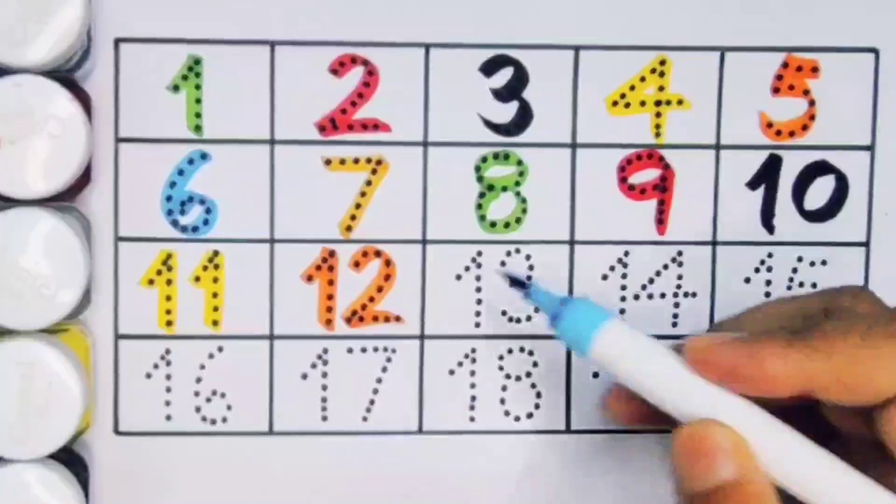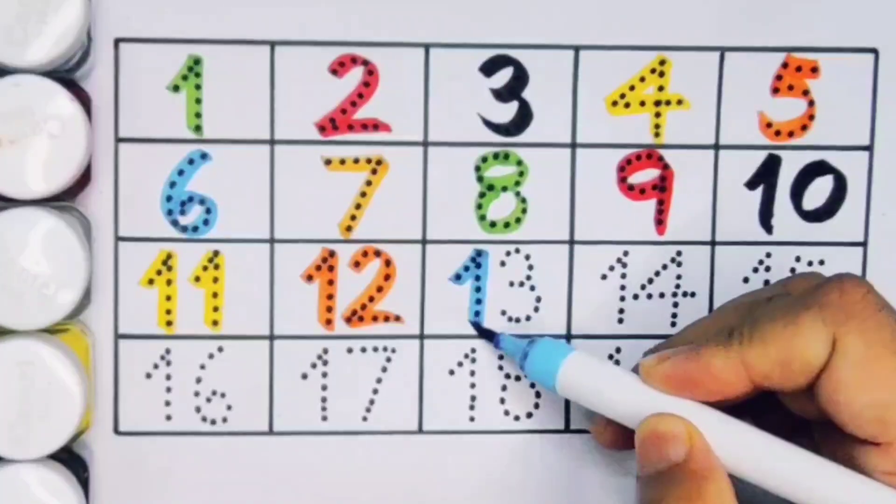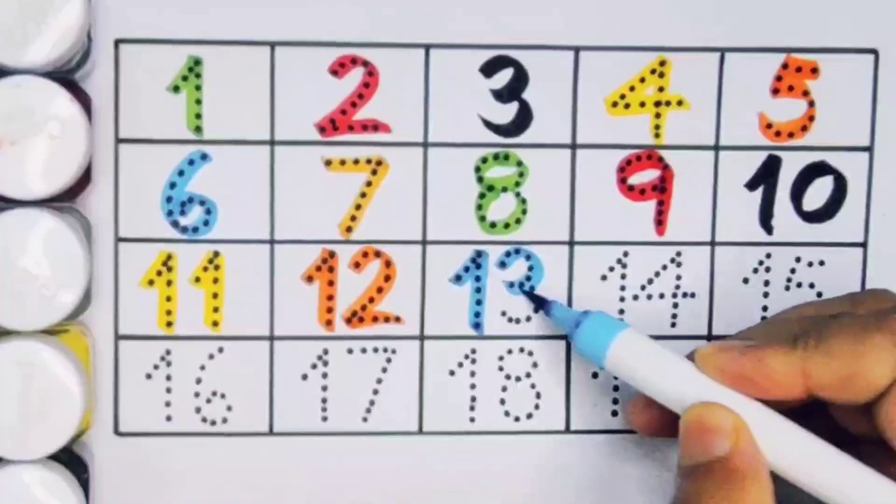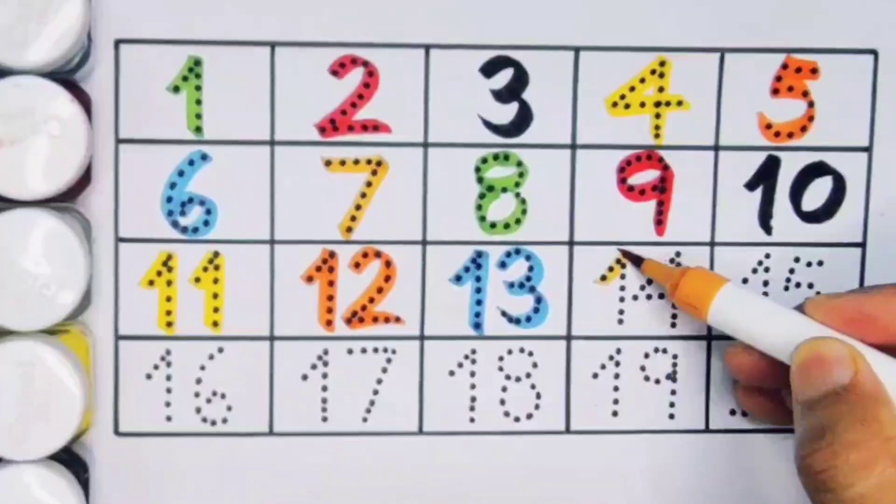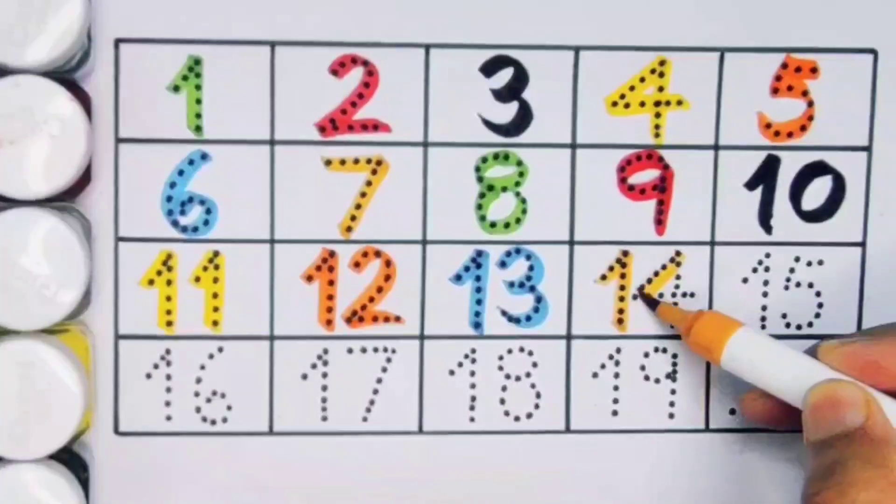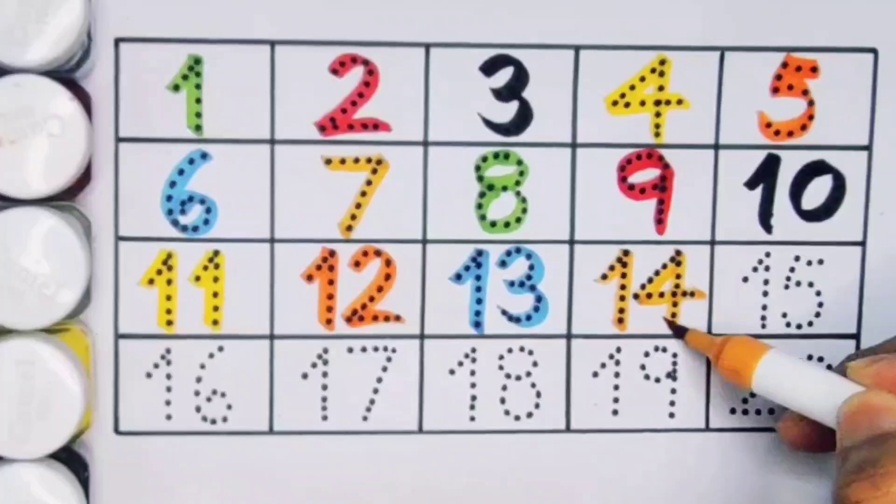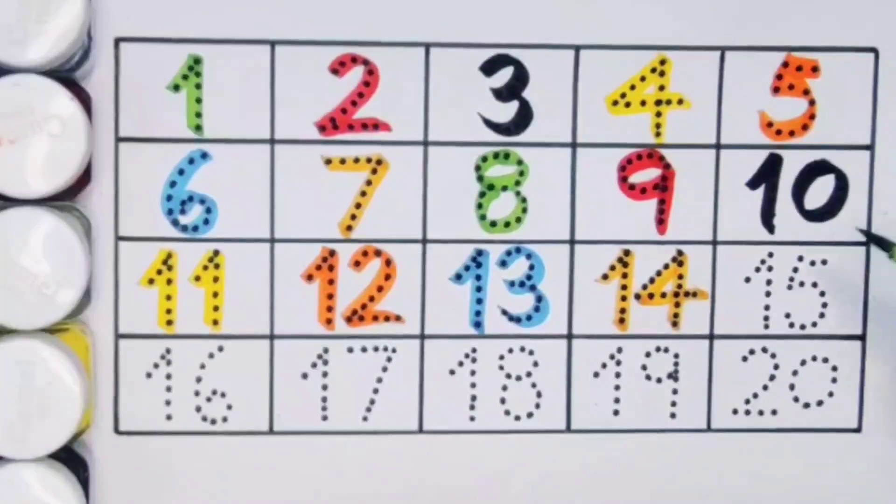Next, thirteen, one three thirteen, number thirteen. Next, fourteen, one four fourteen, number fourteen. Next, fifteen, one five fifteen, number fifteen.